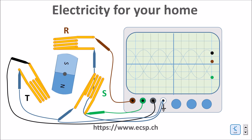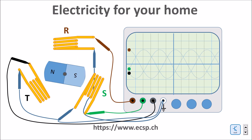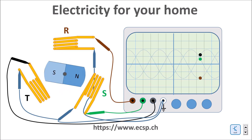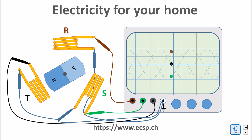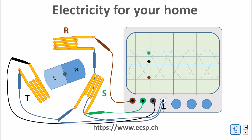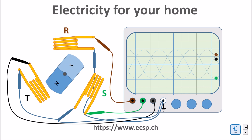If I measure the induced voltage of the three coils, I see that the three voltage curves are also displaced by 120 degrees from each other. The three phases we have seen at your home are connected to the three phases of the generator.